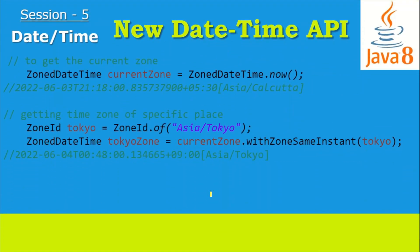If the time zone is also required, we use ZonedDateTime. Similarly, we get its instance from ZonedDateTime.now(), which returns output containing the date, time, offset, and also the time zone. When executed on my system, it was in Indian Standard Time, so the zone name shown is Asia/Calcutta.